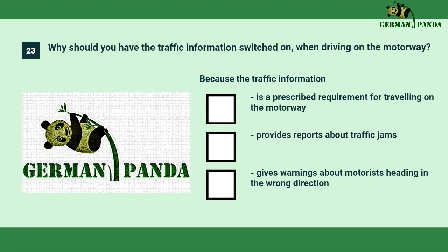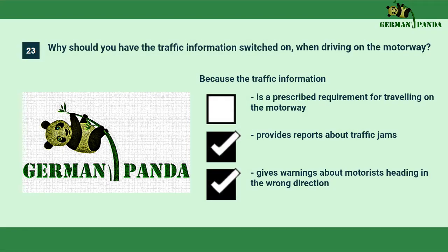Why should you have the traffic information switched on when driving on the motorway? Because the traffic information provides reports about traffic jams and gives warnings about motorists heading in the wrong direction.